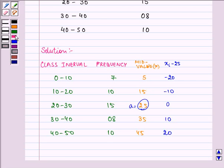Now, the next step is to find out ui. That is x minus 25 upon the number that is common to all these terms, that is 10. All these are multiples of 10. So, we have minus 2, minus 1, 0, 1 and 2.